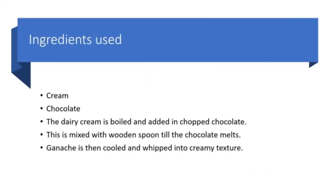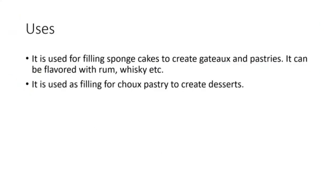The ingredients used to make ganache are cream and chocolate. Preferably, chocolate compound should not be used as it deteriorates the quality of ganache. For making ganache, the dairy cream is boiled and added to chopped chocolate. This mixture is then mixed with a wooden spoon till the chocolate melts. After cooling, the ganache is whipped into a creamy texture. It can be used immediately or stored in the refrigerator for later use. Ganache is used for filling sponge cakes to create gateaux and pastries. It can be flavored with rum, whiskey, etc. It is also used as filling for choux pastry to create a variety of desserts.